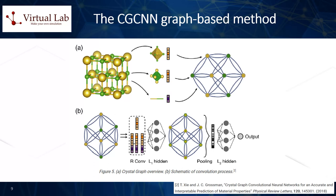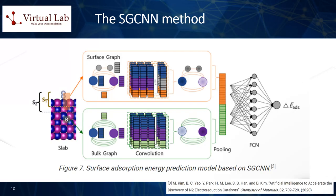It was shown that the accuracy of predicting the physical properties of new materials was very high, thus establishing graph-based neural networks as a very useful strategy in the design and discovery of new materials. Another useful graph-based AI method in computational materials science is the Slab Graph Convolutional Neural Network, or SGCNN.